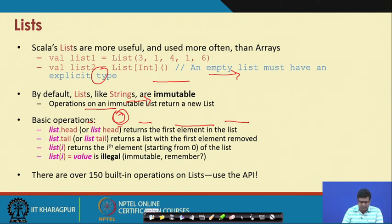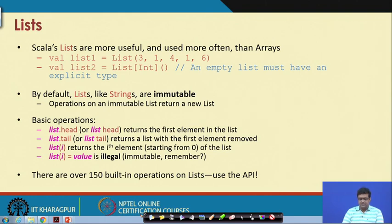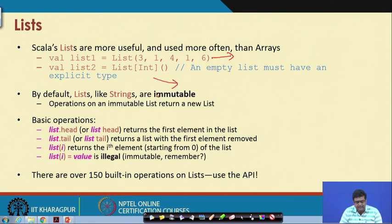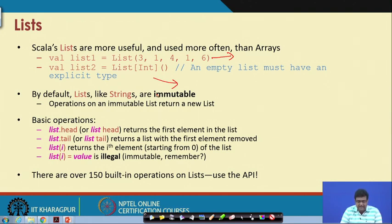Before going into higher-order functions we want to define lists. Lists are like arrays — here is an example of a list. You can also have an unpopulated list, in which case you have to specify the type. Lists, like strings, are immutable arrays. Lists represent a list of values which you need to operate on.